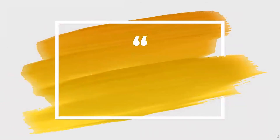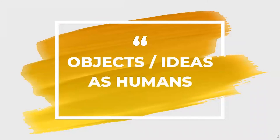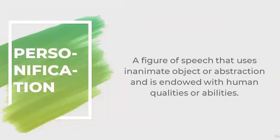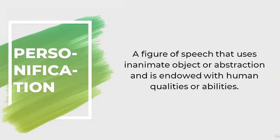The next category is objects or ideas as human. The figure of speech that belongs to this category is personification. Personification is a figure of speech in which an inanimate object or abstraction is endowed with human qualities or abilities. This allows writers to create life and motion within inanimate objects, animals, and even abstract ideas by assigning them human behaviors and emotions.